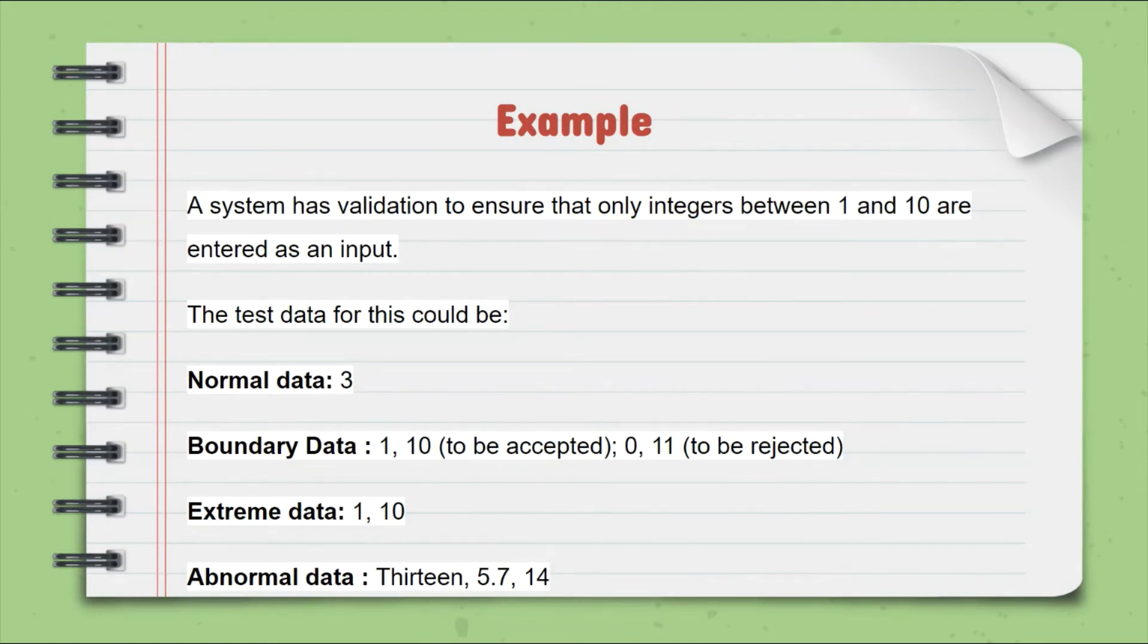Boundary data is 1, 10 and it is accepted. Whereas 0, 11 is also boundary data but it is rejected since 0 is less than 1 and 11 is greater than 10.